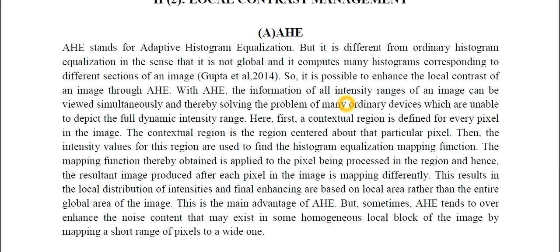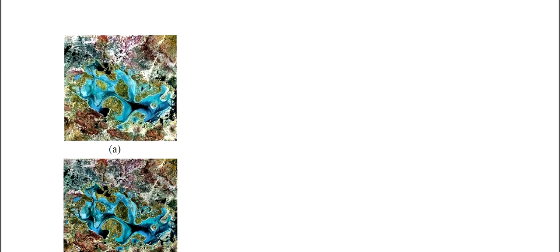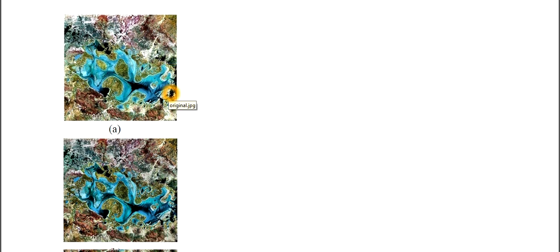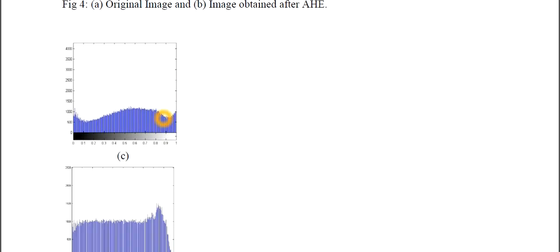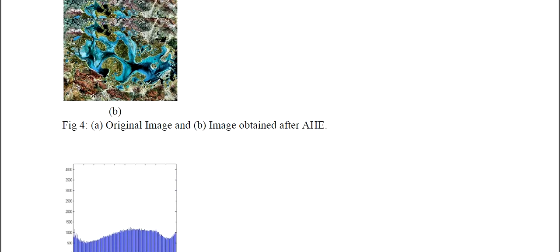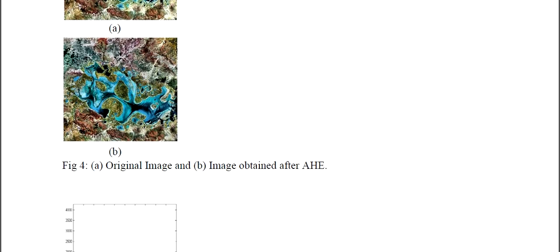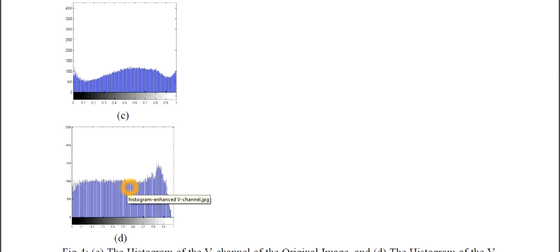To show an experimental result: the first image is the original image, and the second one is obtained after Adaptive Histogram Equalization. Every local region is being intensified or enhanced by AHE. You may also see the histogram — this is the histogram of the original image, and this is the histogram after Adaptive Histogram Equalization.